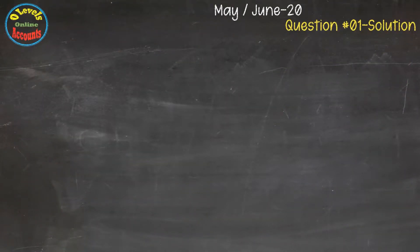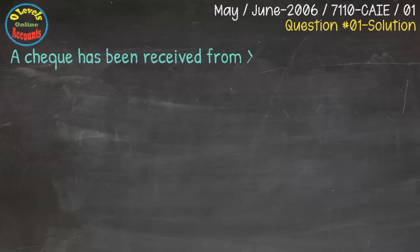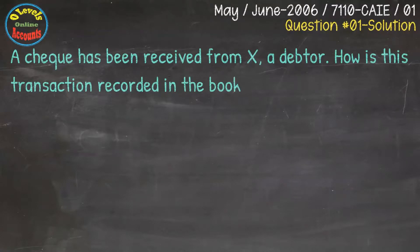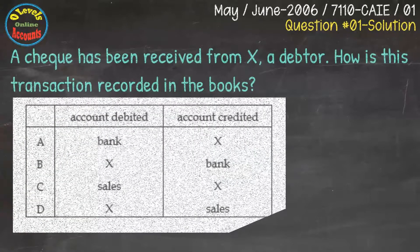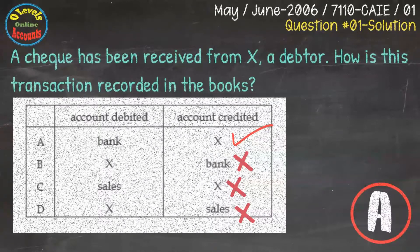We have question number 1 from May/June 2006, 7707 CAIE Paper 1. In this question, a cheque has been received from Debtor X. How is this transaction recorded in the books? We pass a double entry: bank debit and debtor credit. This is the correct answer and it is available with the A option in the question.